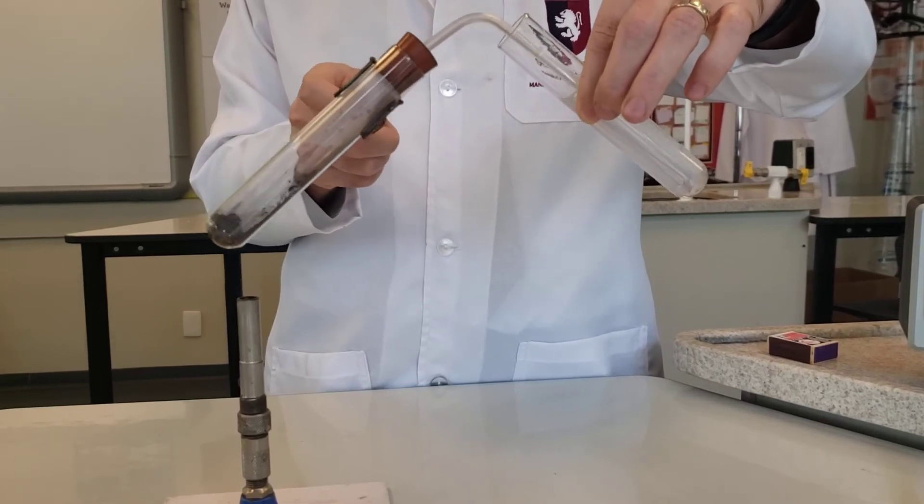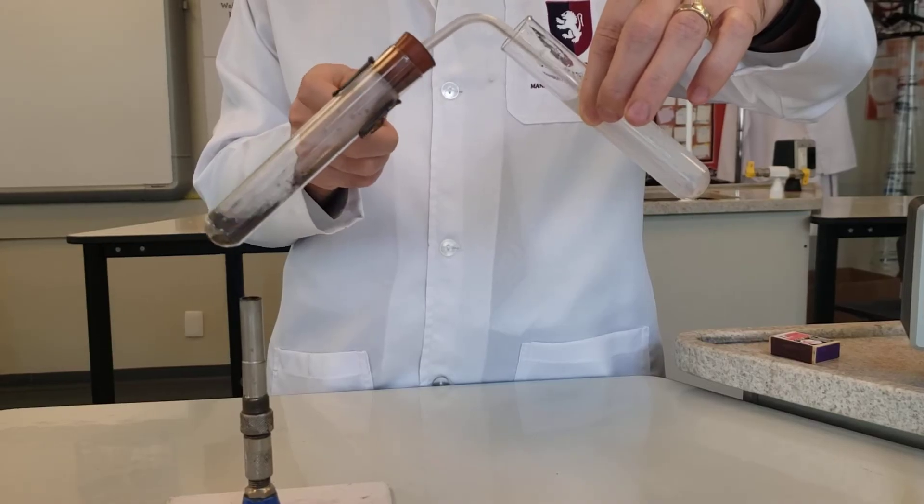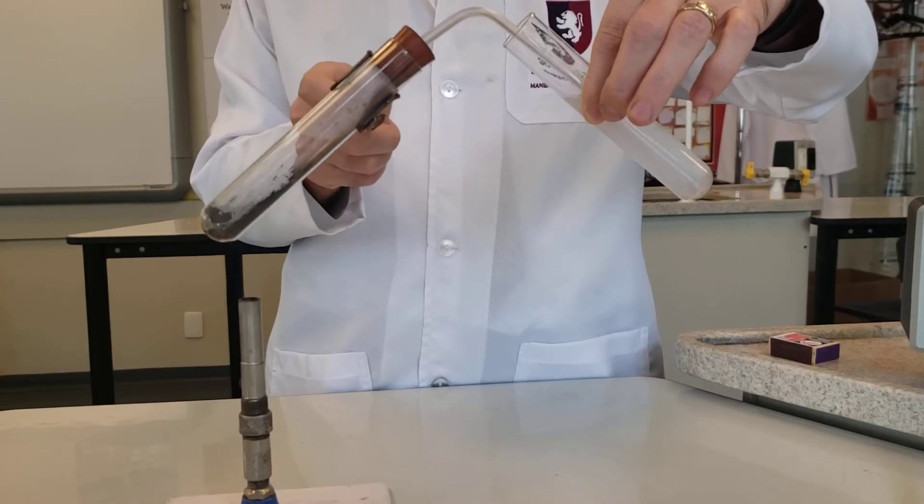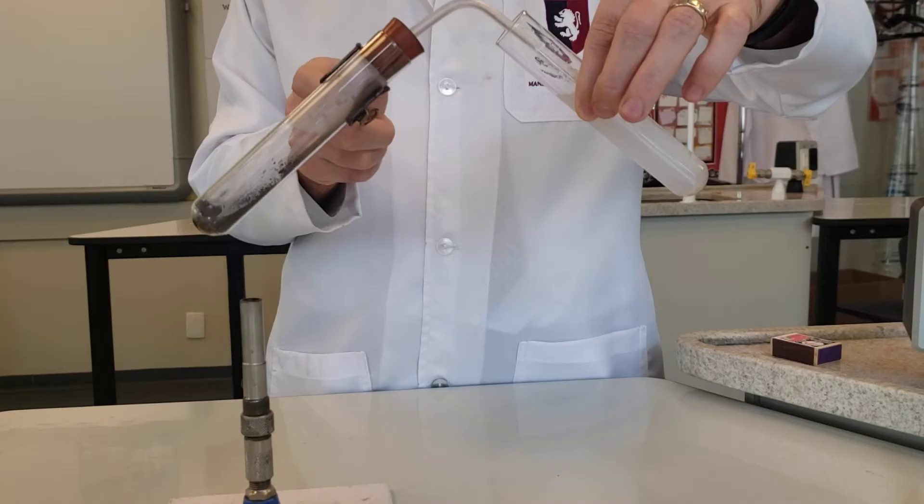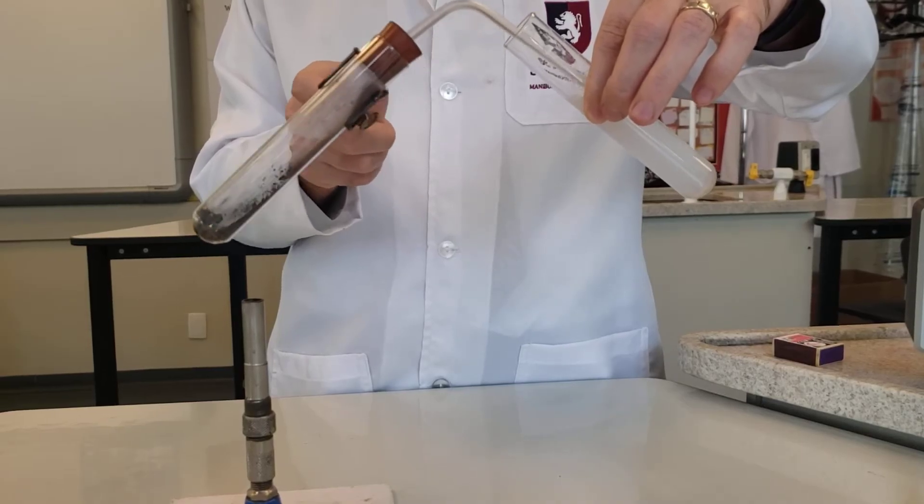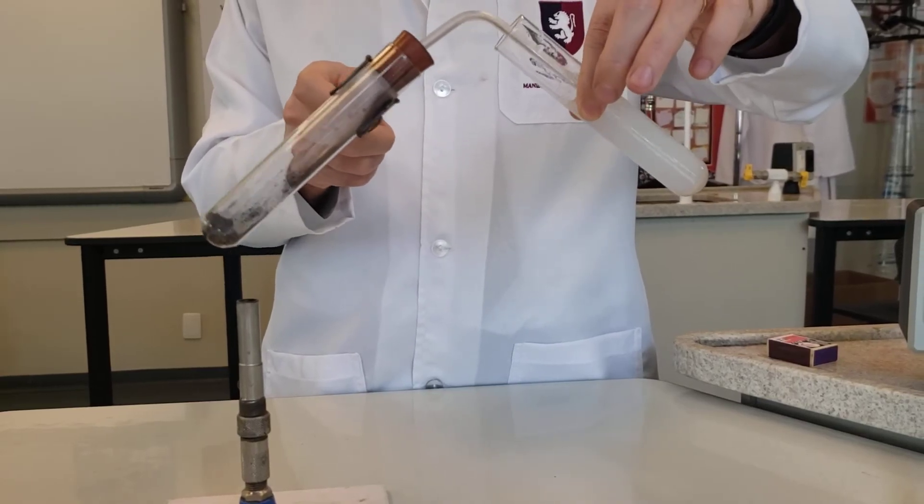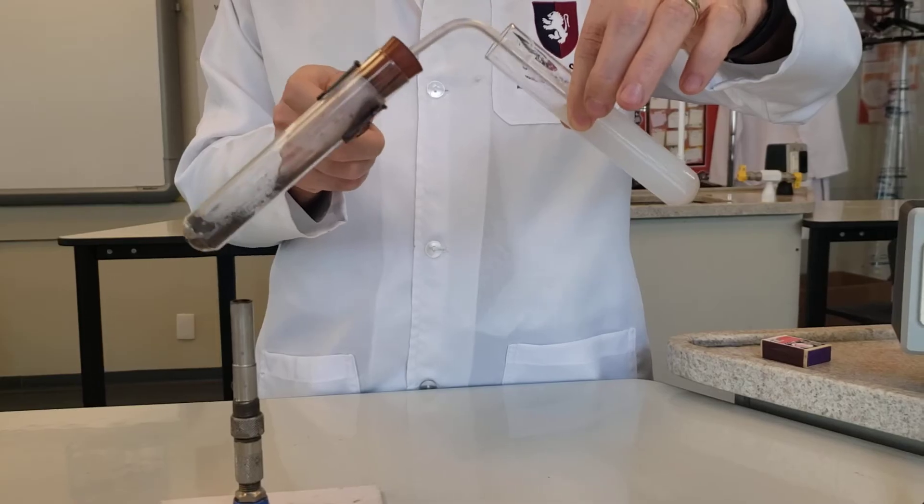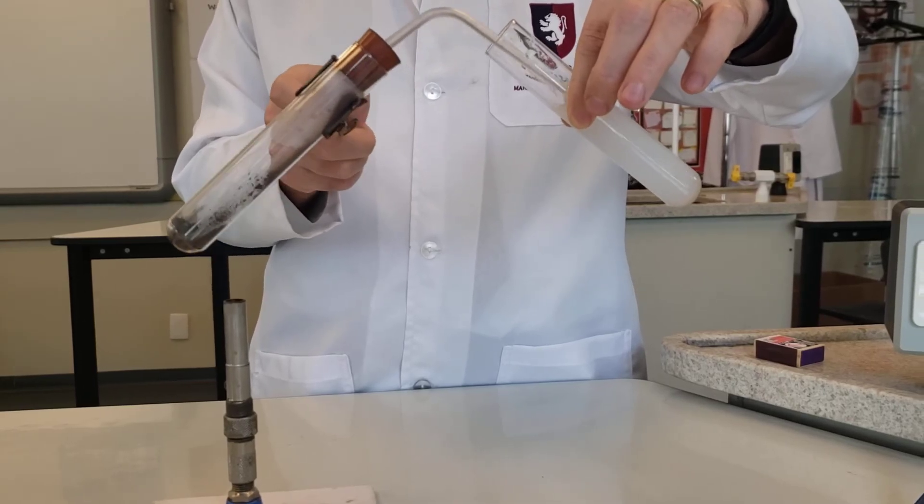You can also see some condensation at the top of the tube. That shows maybe water coming out of the copper carbonate. So it's hydrated copper carbonate. And also now you can see my lime water is going milky.